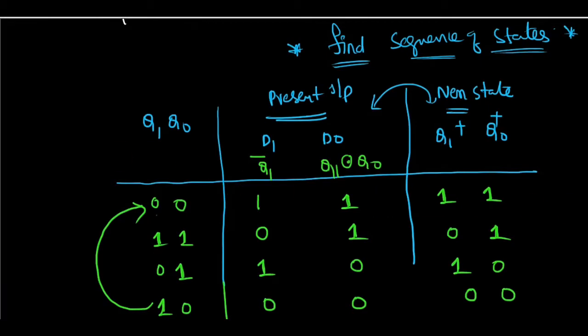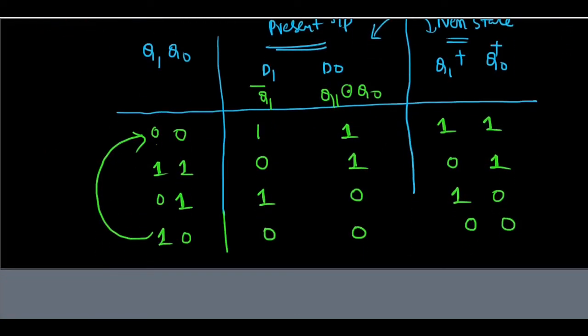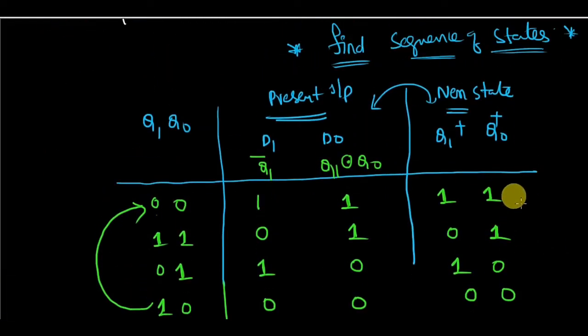So here it is. You can see here the question is given and from that we got the analysis and the sequence. If it is 0 0 then it is going to next state 1 1. From 1 1 it is going to 0 1. From 0 1 it is going to 1 0. Again from 1 0 it is getting back to 0 0. So this will be your answer.